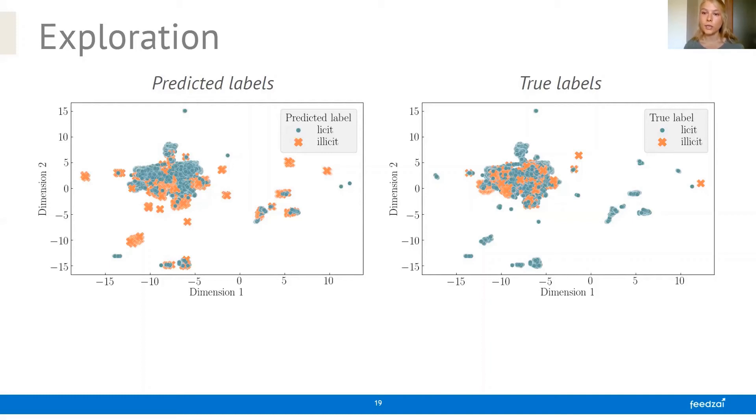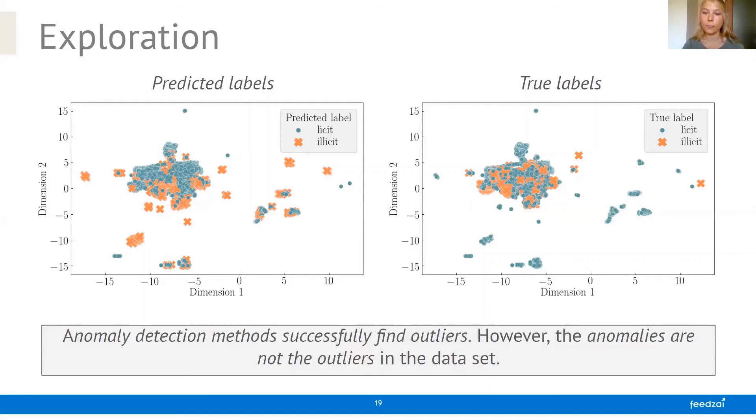However, the true label shows that the illicit cases are not actually the outliers, but rather they're hidden in this dense region of licit activity. So we could conclude that even though our anomaly detection methods do successfully find outliers, the anomalies that we are looking for, so the illicit behavior, is not actually outlying in this data set. This is why this is not working.